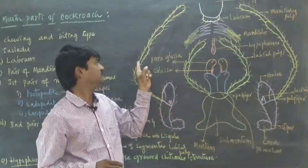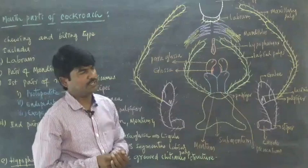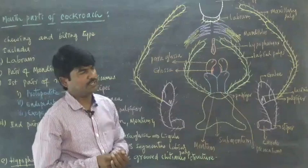one pair of mandibles, first pair of maxillae, second pair of maxillae, and hypopharynx.